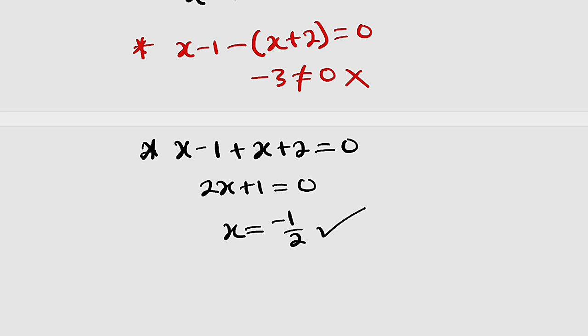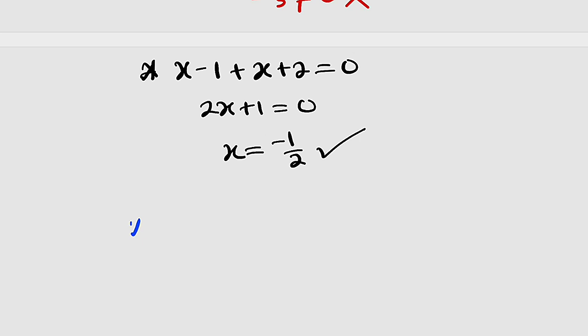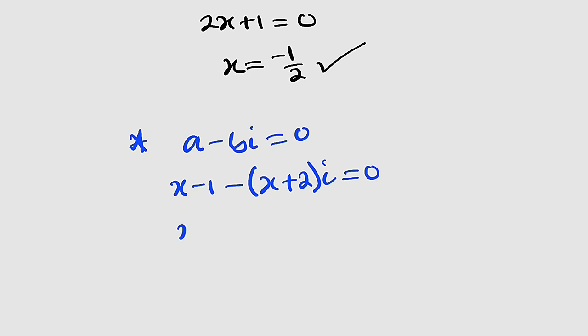Then we'll move to the complex values, where we have a minus b i equal to 0. But a is x minus 1 minus b is x plus 2, multiplied by i, equal to 0. This is x minus 1 minus xi minus 2i, equal to 0.